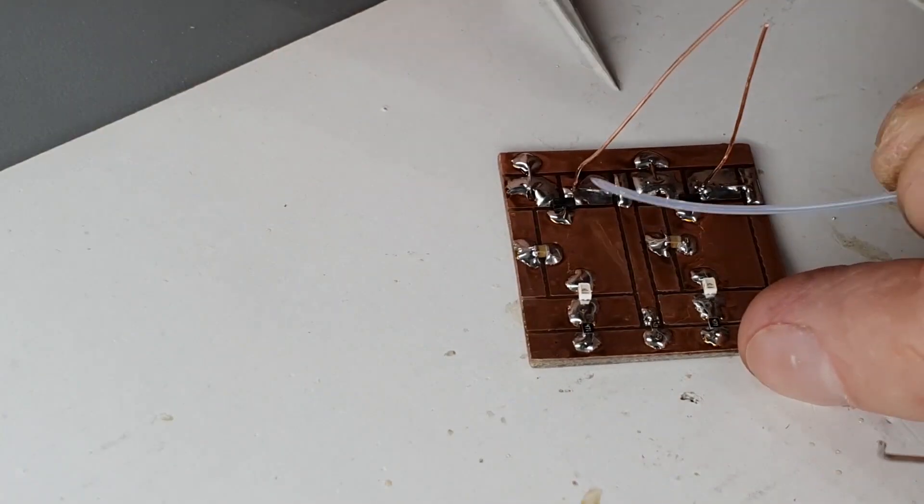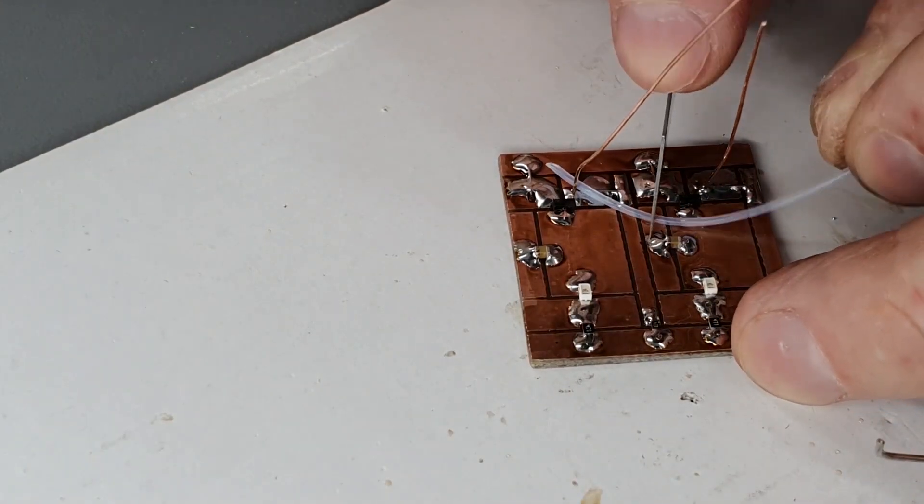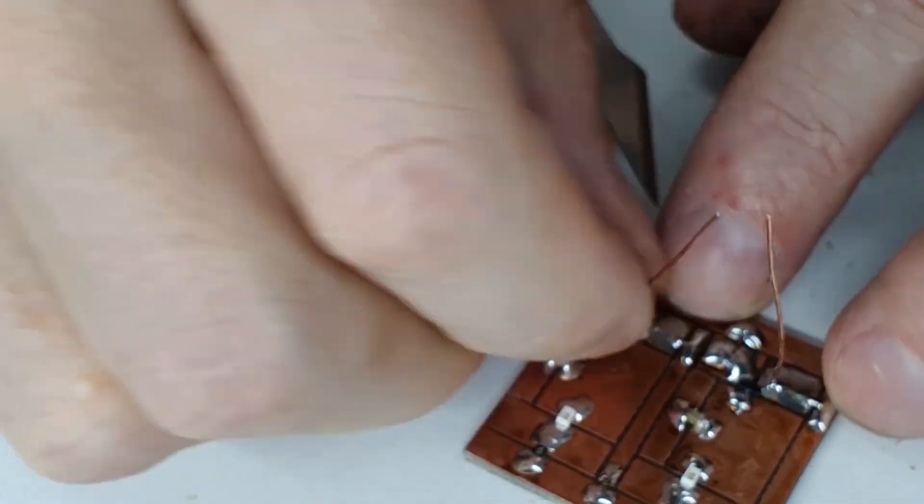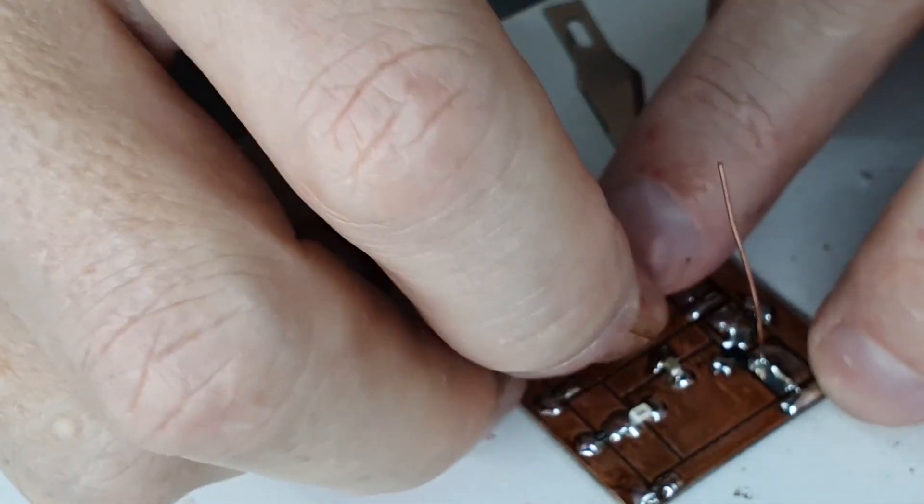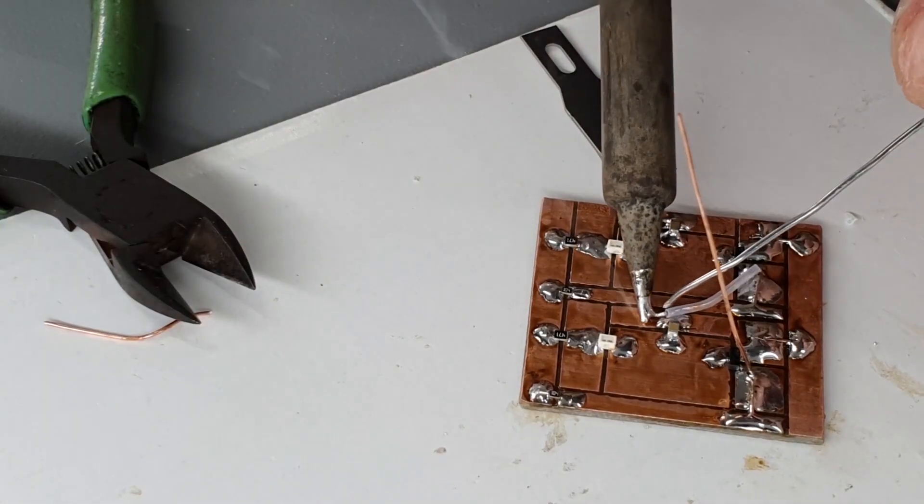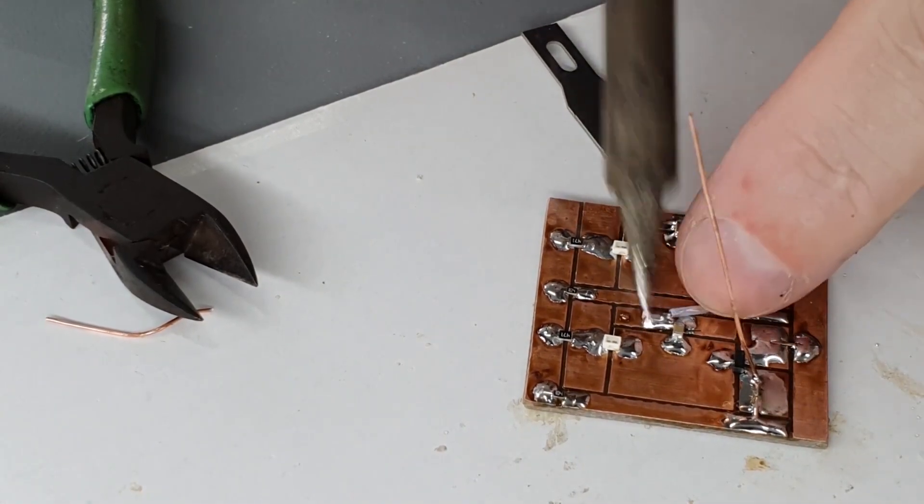Install Teflon tubing over the wires after soldering one end in place. Tin the other end of the wire and solder it to the other node.